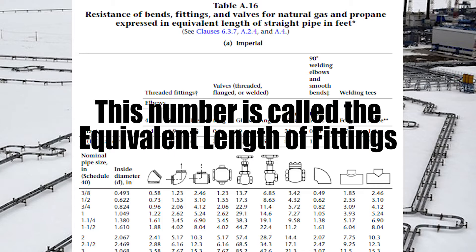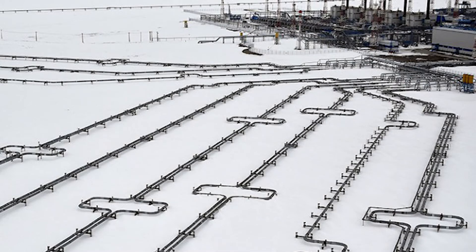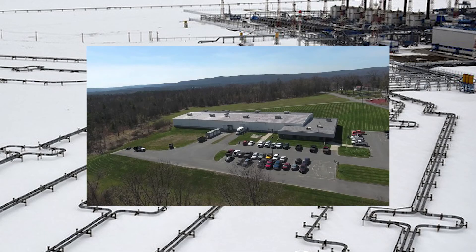That will happen in the next video. There's also a metric equivalent for this table called A16 concluded, where everything is measured in meters and millimeters. That brings us to the end of this video — stay tuned for the next high pressure gas line sizing video where we take everything we've learned here and apply it to a high pressure gas line sizing example. Until then, you have yourself a wonderful day.